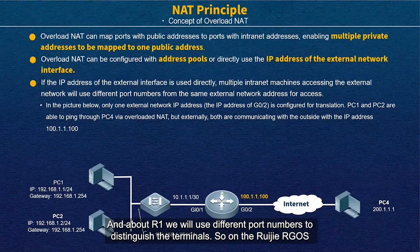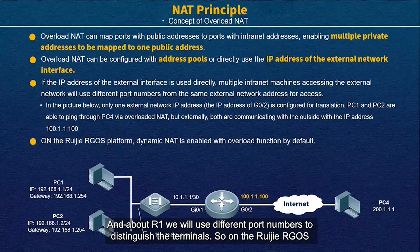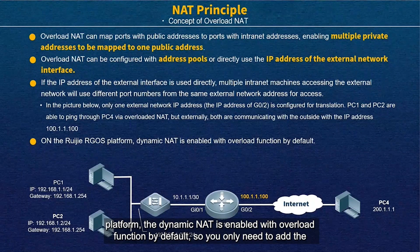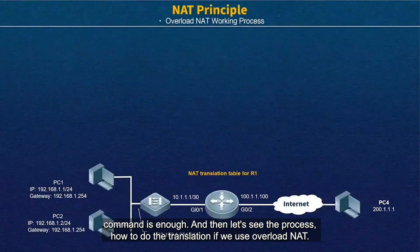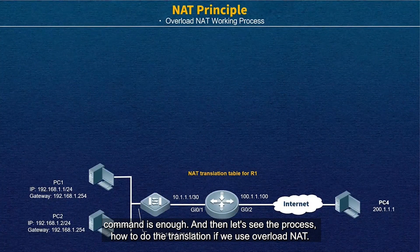We will use different port numbers to distinguish the terminals. On the RGOS platform, the dynamic NAT is enabled with the overload function by default, so you only need to add the command and that's enough. Now let's see the process of how translation works when we use overload NAT.